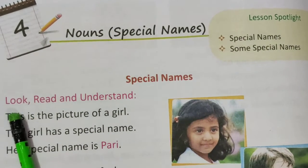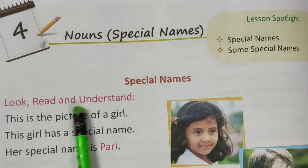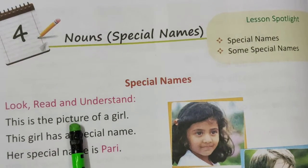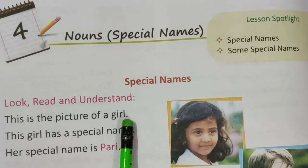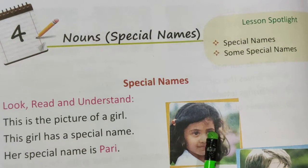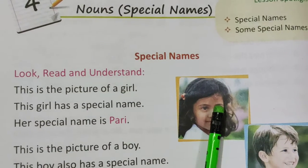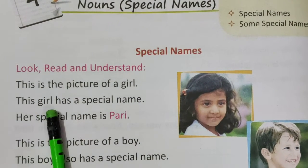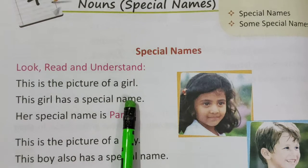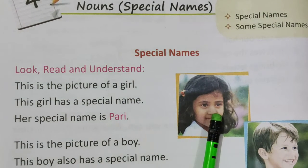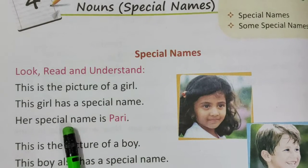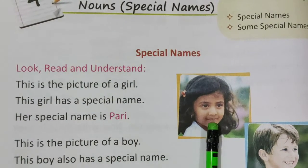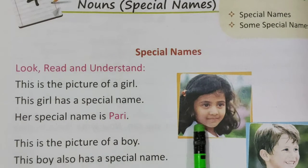Look, read and understand. This is the picture of a girl. Yeh kis ka picture hai? Yeh ek girl ka, ek ladki ka picture hai. This girl has a special name. Is girl ka ek special name hai. Her special name is Pari. Is girl ka special name kya hai? Pari.